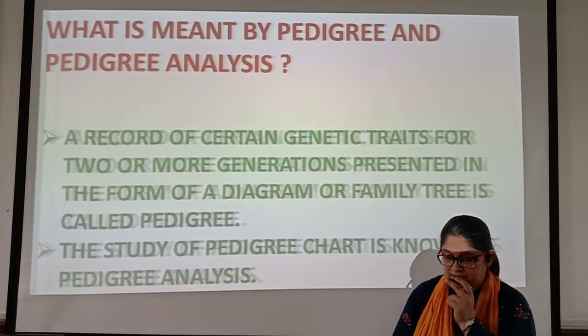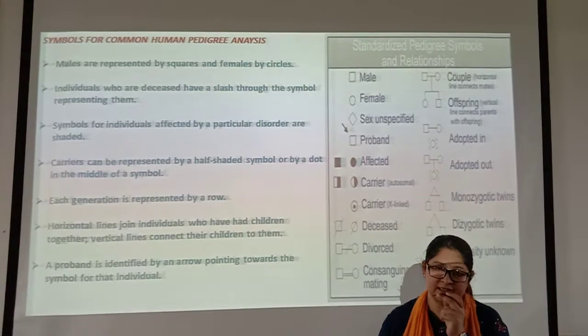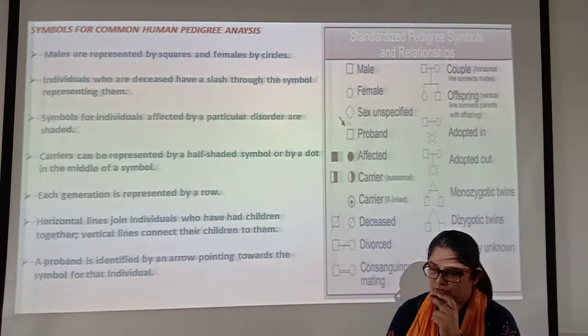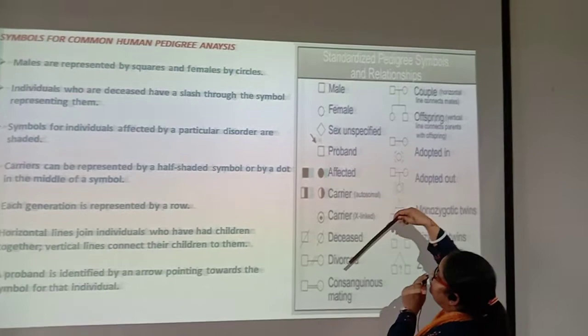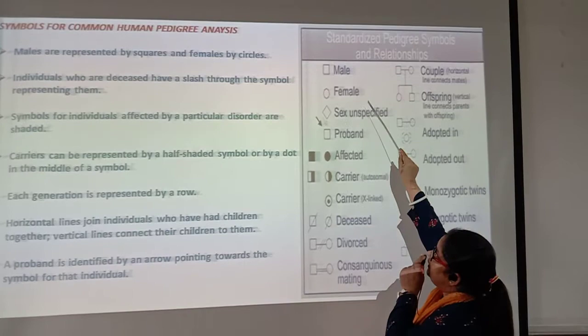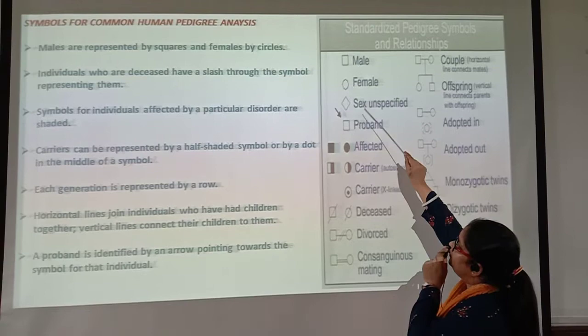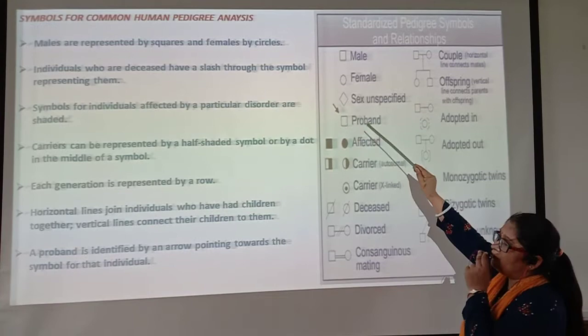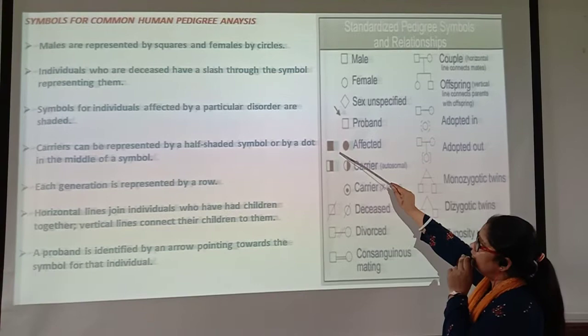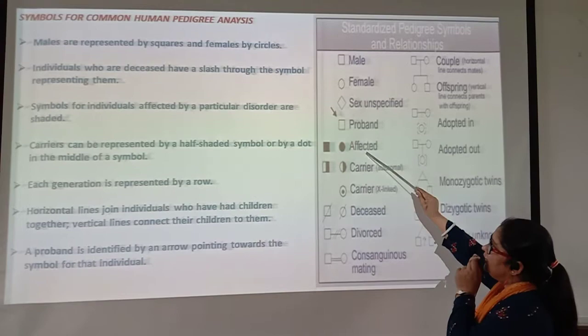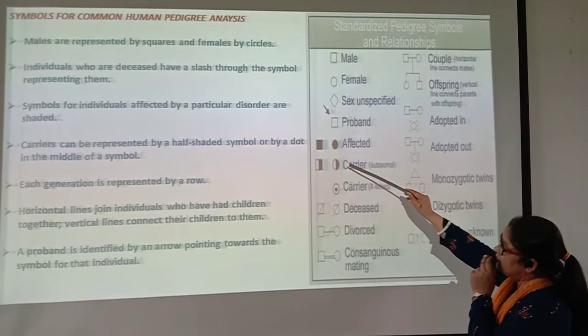Let us start with the symbols. As I said, some symbols are used to make pedigree charts. By the help of a square, we represent a male. By the help of a circle, we represent a female. There is also the proband — the individual in whom the trait is first seen in the generation. If we shade the symbols — the squares and circles — it means affected individuals. If it is half-shaded, it means a carrier of a particular trait.